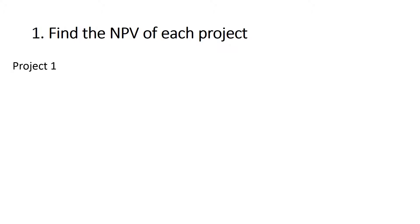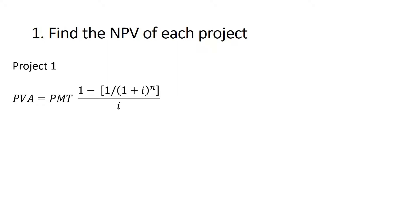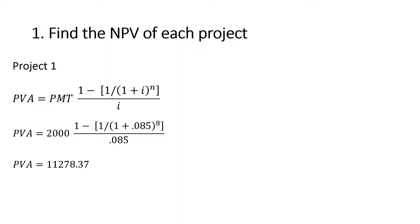For project one, we have a cash inflow of $2,000 annually for eight years — this is an annuity. So instead of discounting each $2,000 separately, we find the present value of an annuity using the annuity equation, which gives $11,278.37. The net present value is then -$9,000 plus $11,278.37, giving an NPV of $2,278.37.